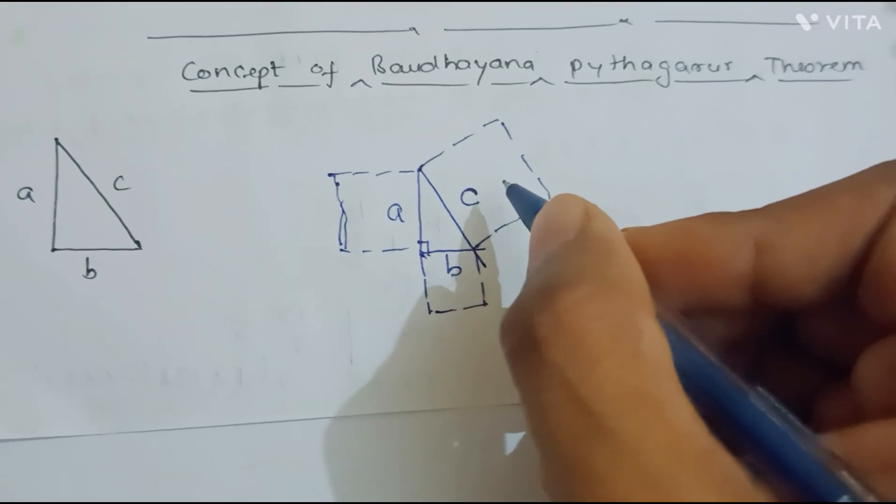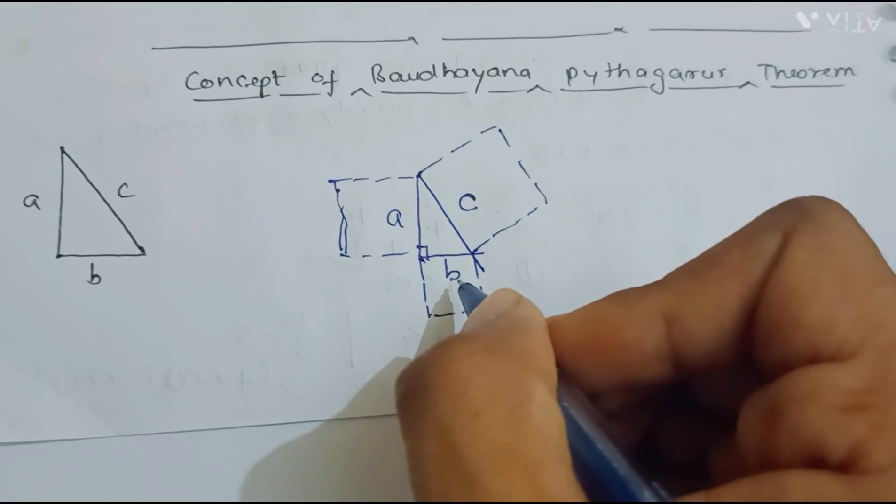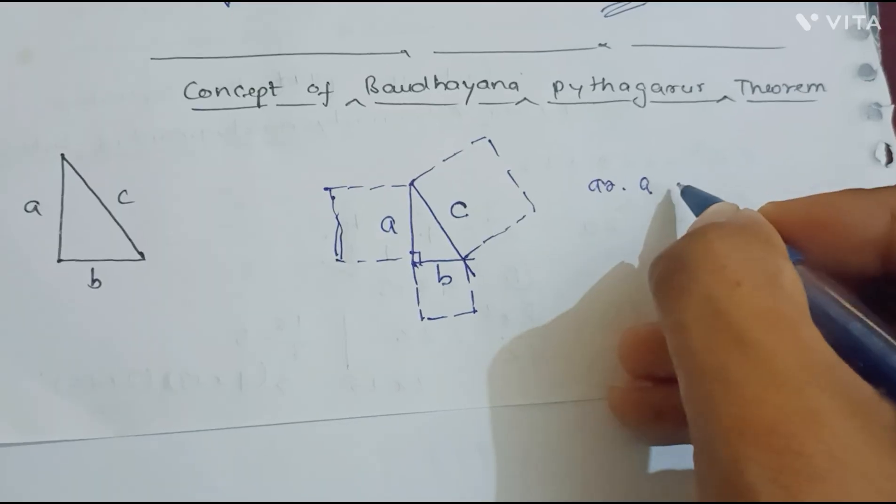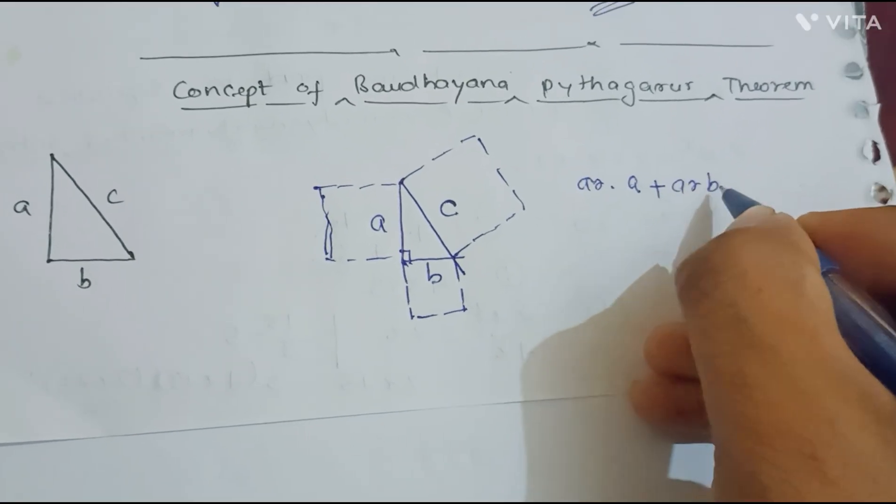That will have equal area that is of the sum of the first and second square. That means if we will find the area of a and add with the area of b, then we will get the area of c.